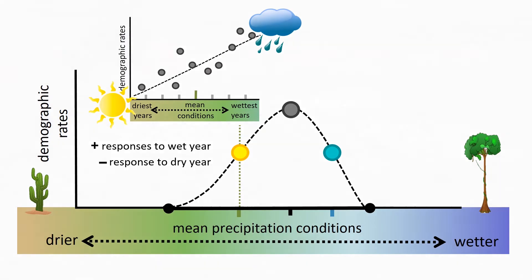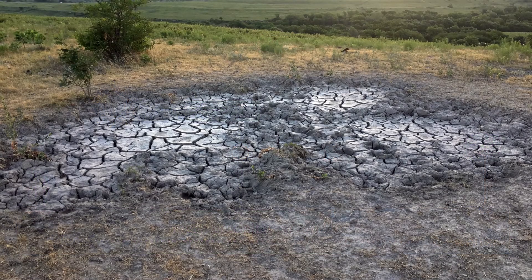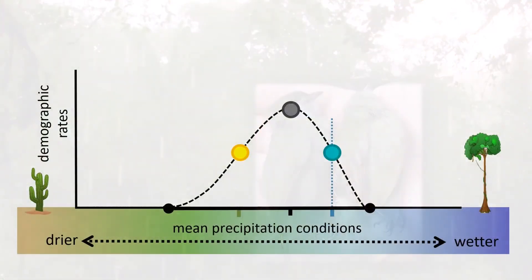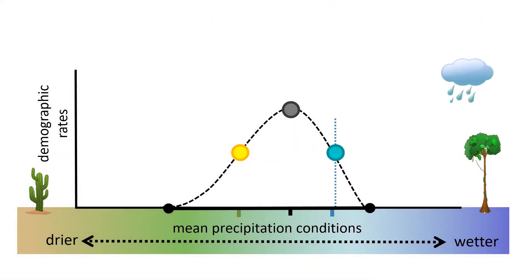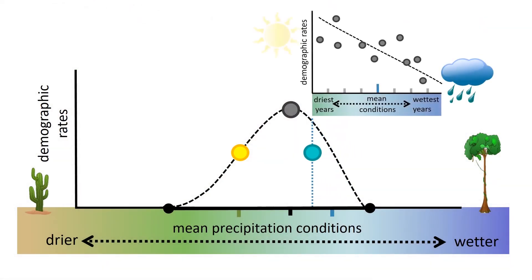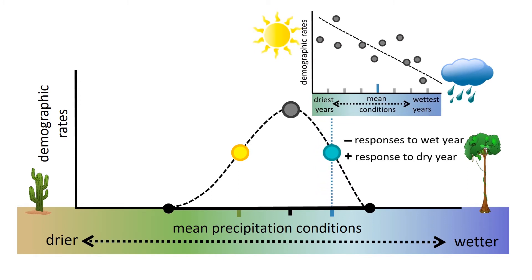We're accustomed to thinking of droughts as generally bad for animals and the organisms that they depend upon for food. What isn't as intuitive is that populations near the wetter end of the species' Hygric Niche can be constrained by too much rainfall. For them, a wetter-than-average year would approximate conditions closer to those lethal extremes, whereas a drier-than-average year would more closely resemble the optimal conditions.